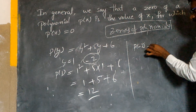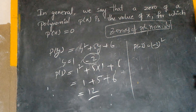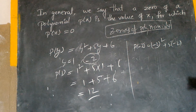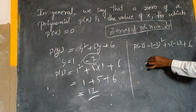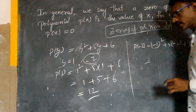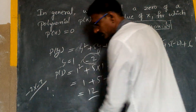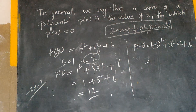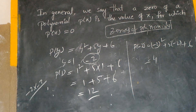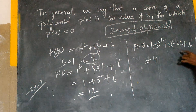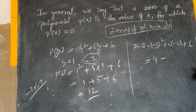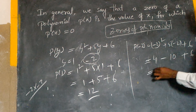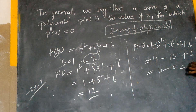Minus two. P of minus two: minus 2 whole square plus 5 into minus 2 plus 6. Minus two into minus two — minus into minus is plus — two twos are four. Plus into minus is minus, five into two is ten. Six plus four is ten. Ten minus ten is zero.